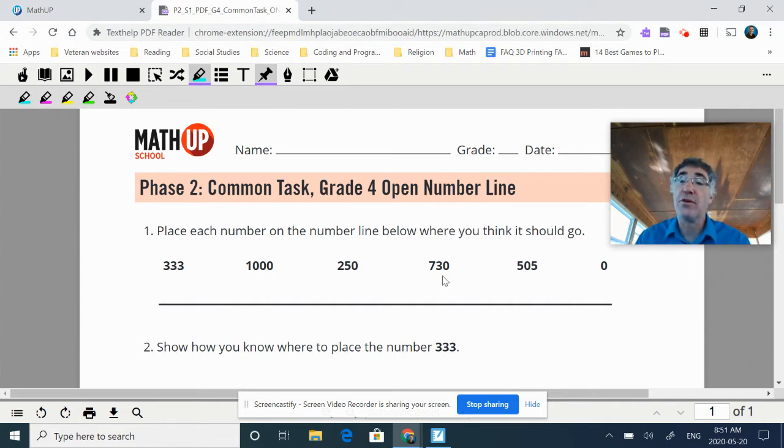The 730, that's actually close to 750. So that's like three fourths of this number. 505, again, just slightly over half. 333 would be a third and zero, of course, would be at the start of the number.